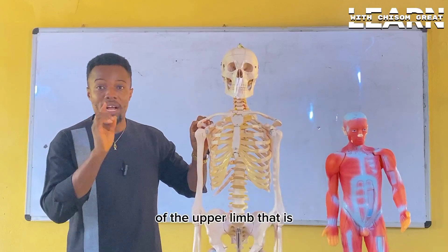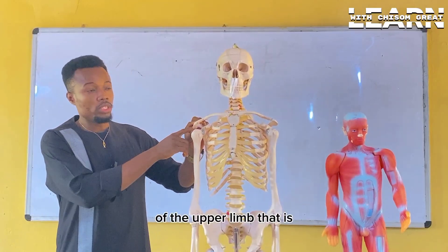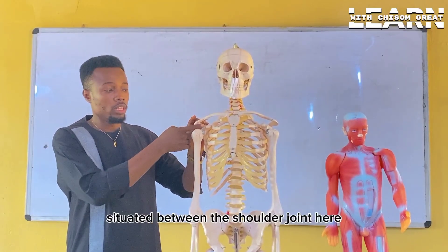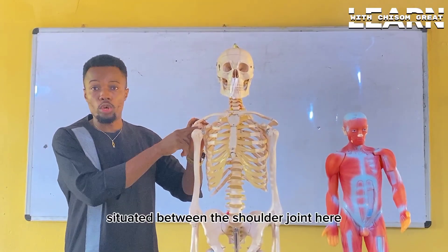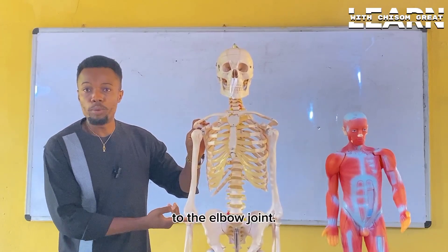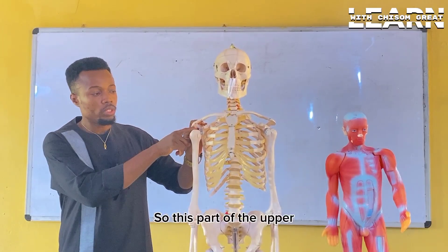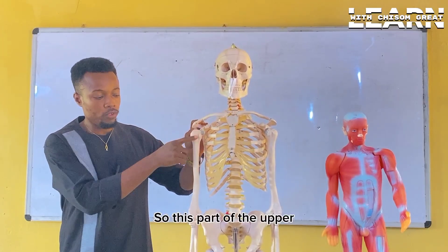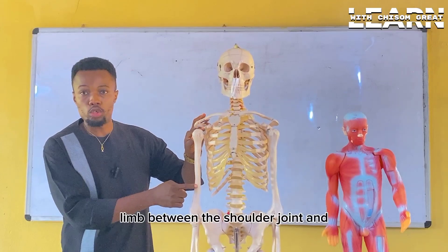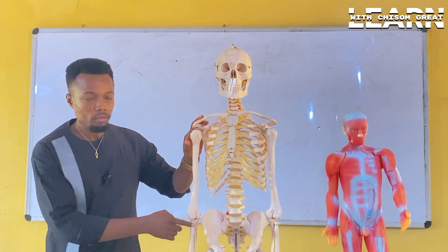The arm is the part of the upper limb that is situated between the shoulder joint here to the elbow joint. This part of the upper limb between the shoulder joint and the elbow is the arm.